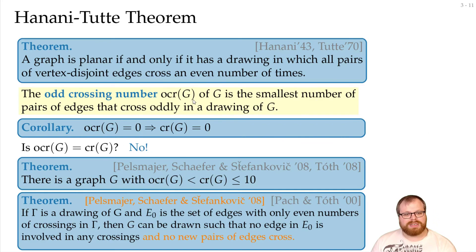So the odd crossing number is not the answer. We cannot just look at pairs of edges that cross oddly.